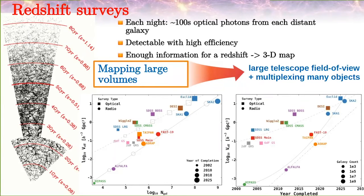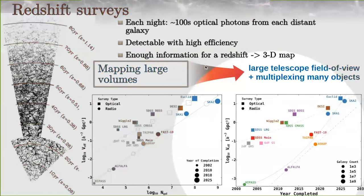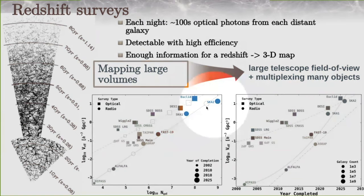From the observational side, redshift surveys detect hundreds of sources from optical photons from distant galaxies with high efficiency, enabling us to create three-dimensional maps to characterize the density field. Among the previous and current galaxy surveys in both optical and radio, there are at least two or three big upcoming projects: Euclid and DESI for the optical part, and the SKA for radio observations. These will map the universe as never before.